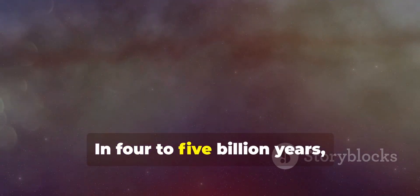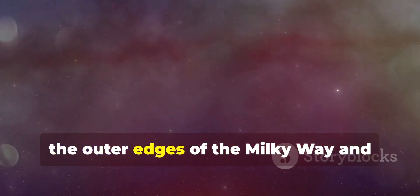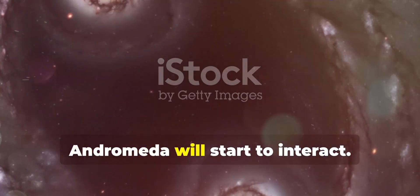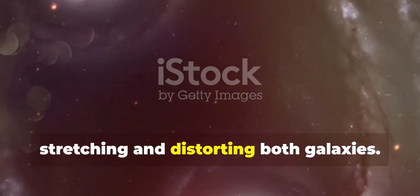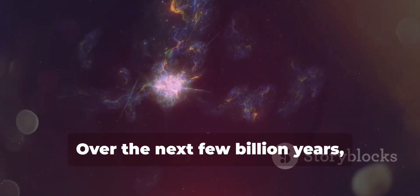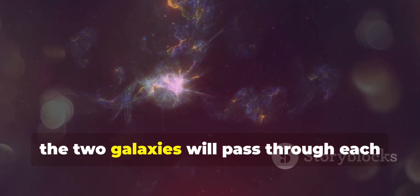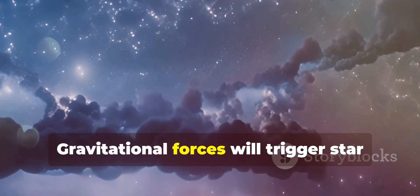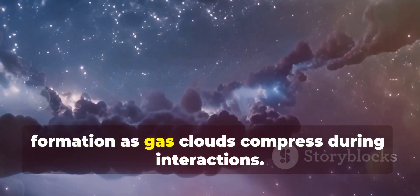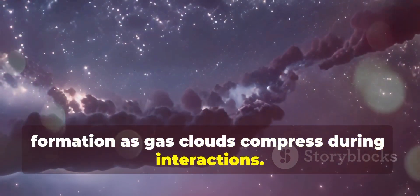In 4 to 5 billion years, the outer edges of the Milky Way and Andromeda will start to interact. This will create tidal forces, stretching and distorting both galaxies. Over the next few billion years, the two galaxies will pass through each other several times. Gravitational forces will trigger star formation as gas clouds compress during interactions.